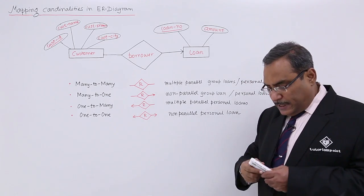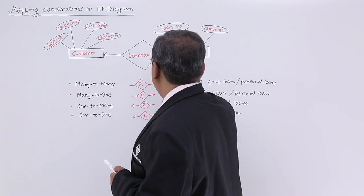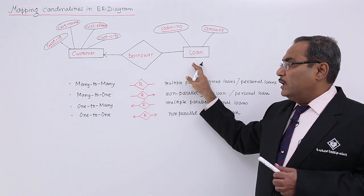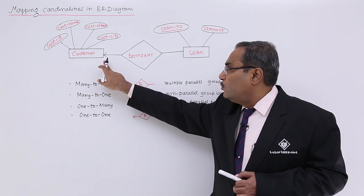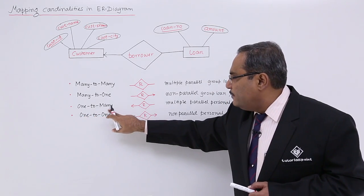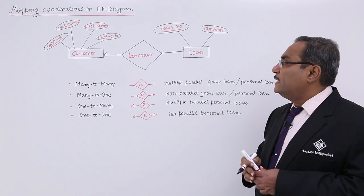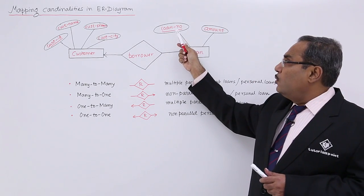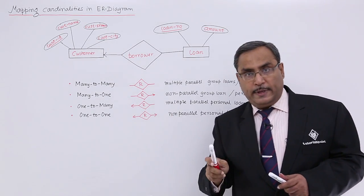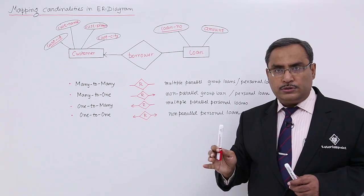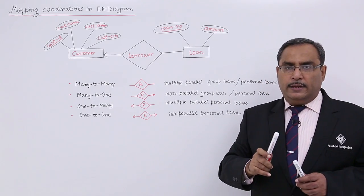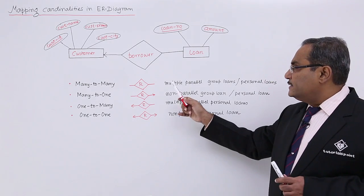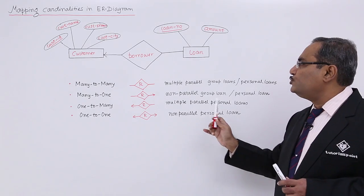Next is one-to-many. The arrow will be directed toward the customer side, meaning there is no arrow on the loan side, only on the customer side. So loan is 'many' and customer is 'one'. This means one customer can take multiple loans, but one Loan Number has only one Customer ID. That means the bank does not issue any group loans — they issue only personal loans. As a result, this bank issues multiple parallel personal loans.